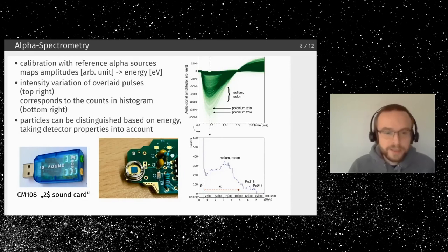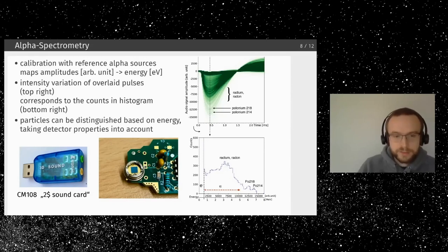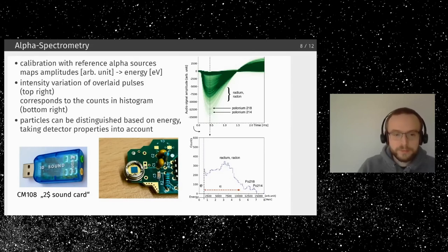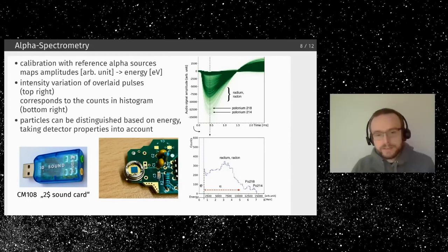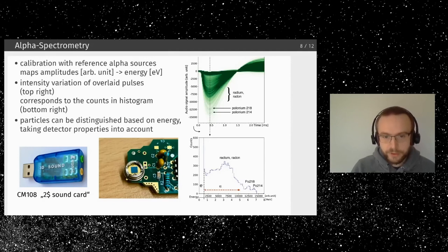Doing 16-bit measurements with an Arduino is actually quite hard, so using this cheap sound card keeps things straightforward. Python scripts on the computer can read it out. To measure alpha particles, we have to remove the glass window on top of the BPX61 diode by cutting into the metal frame — the glass then breaks away easily. More details are on the wiki.